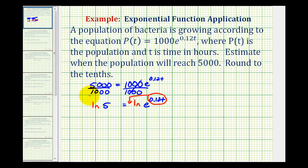So now we would have ln 5 = 0.12t · ln e. Now a lot of times you'll see in some textbooks they leave off this ln e. The reason for that is ln e is equal to 1.